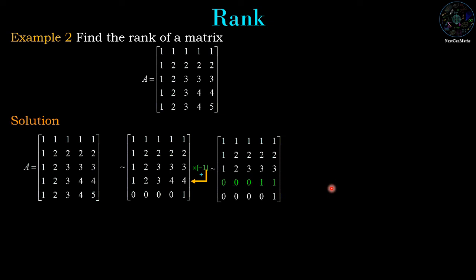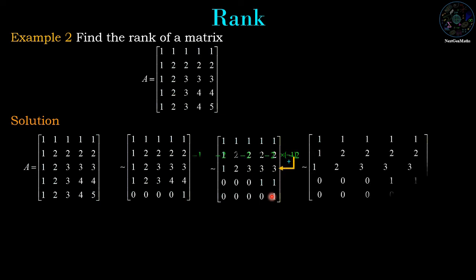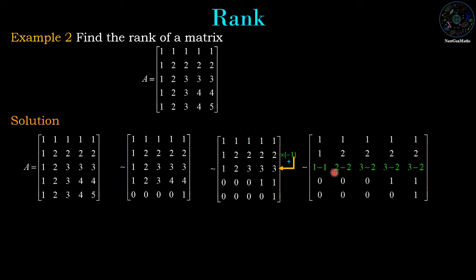In the next operation we multiply row 2 by minus 1 and add it to row 3. The result gives: 0, 0, 3-2=1, 3-2=1, 3-2=1. So the new row 3 is 0, 0, 1, 1, 1.